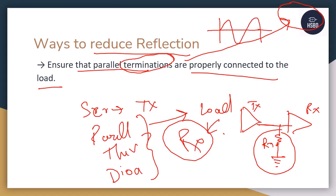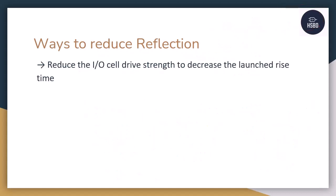Reflections can be seen as overshoots in your waveform — this peak you see here is an overshoot, and that is a type of reflection.